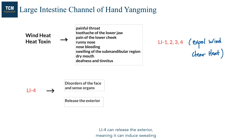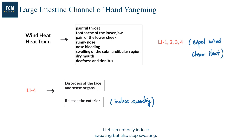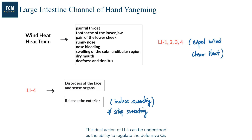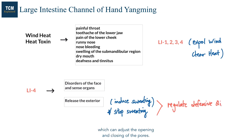LI4 can release the exterior, meaning it can induce sweating and expel exterior pathogens, whether wind cold or wind heat. LI4 can not only induce sweating but also stop sweating. This dual action can be understood as the ability to regulate the defensive Qi, which adjusts the opening and closing of the pores.